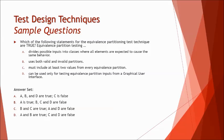So you don't have to get stuck thinking that at any point of time you must have valid as well as invalid in any scenario. This technique can be used to derive both types of test cases. C says must include at least two values from every equivalence partition. No, C is not true because the technique says just one value from each partition. D can be used only for testing equivalence partition inputs from the graphical user interface.